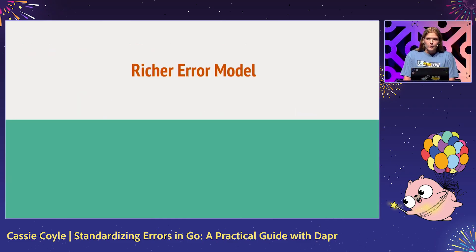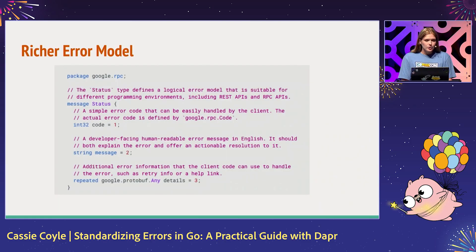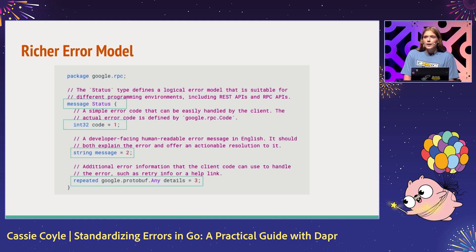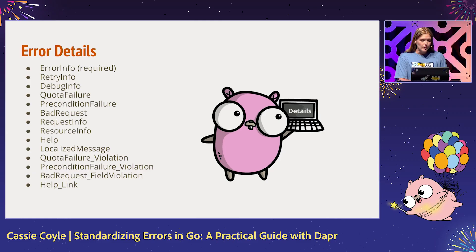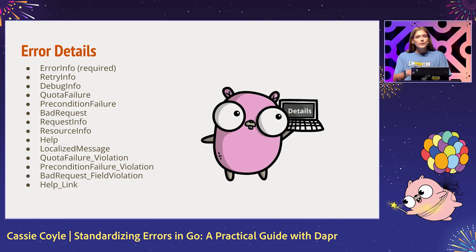The richer error model is the inspiration for our errors package. Here's a snippet of it developed and used by Google. We'll see a message status, the error code, error message, and relevant error details. Now let's take a look at all of the possible error detail types there are — starting with error info, which we require in Dapr, followed by retry info, all the way down to help link. There are quite a few that you can use to enrich your error to be more empathetic to your users.